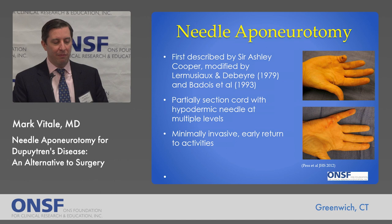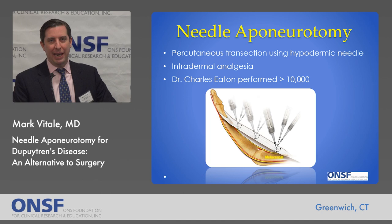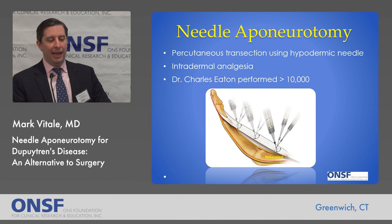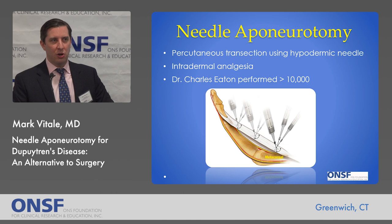Here's a schematic showing what's done. A hypodermic needle — typically a 25-gauge needle, a very small needle — is used to percutaneously puncture and transect the cord at multiple levels. This is done with injections of a very small amount of intradermal analgesia, which numbs up the skin but doesn't numb up the digital nerves, so we can monitor the patient's nerve function. For some reason, many hand surgeons have not been exposed to this in their training, and a small number of hand surgeons did the majority of these procedures.